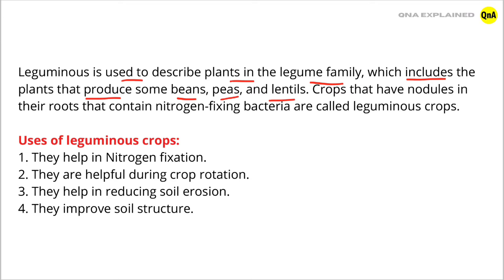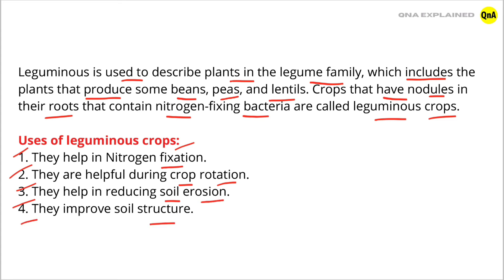Crops that have nodules in their roots that contain nitrogen-fixing bacteria are called leguminous crops. Uses of leguminous crops: they help in nitrogen fixation, they are helpful during crop rotation, they help in reducing soil erosion, and they improve soil structure.